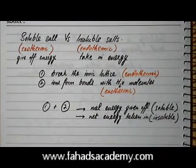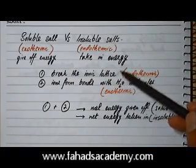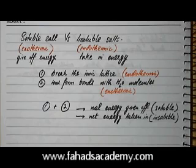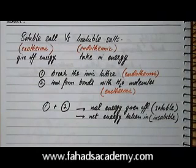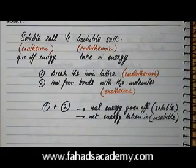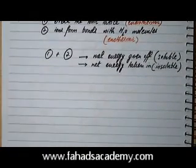For O levels we don't need to go into a lot of detail. You just need to understand that dissolving salts is a reaction where old ionic lattice bonds are broken and new bonds are formed with water molecules. Some salts are insoluble because they require a lot of energy to dissolve and won't dissolve on their own, whereas soluble salts give off energy when dissolving, making it easy. We're now going to move on to the solubility table and write down which salts are soluble and which are not.